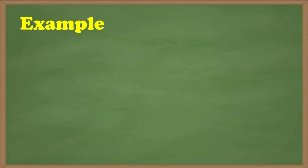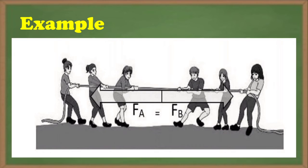For example, suppose two teams are playing Tug of War, shown on the picture in the slide. Each team is pulling with equal magnitude of force, force A and force B on the rope, but in opposite directions. Neither team can make the other team move.